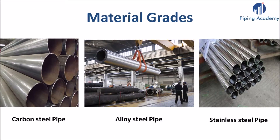According to the World Steel Association there are over 3,500 different grades of steel encompassing unique physical, chemical and environmental properties. What helps a lot is that we can group them into three main categories of steel, of which each group has its very own characteristics beneficial for different kinds of purposes.